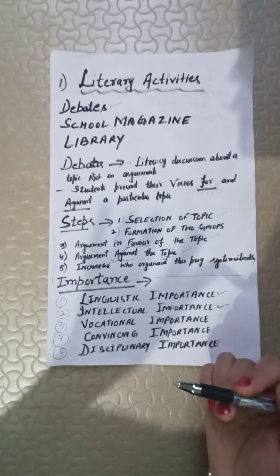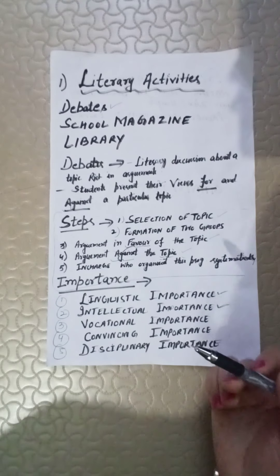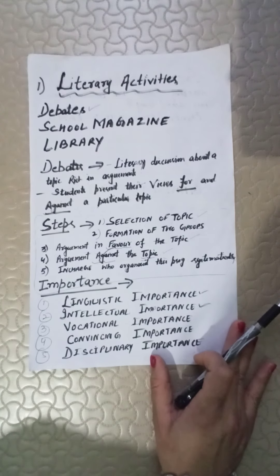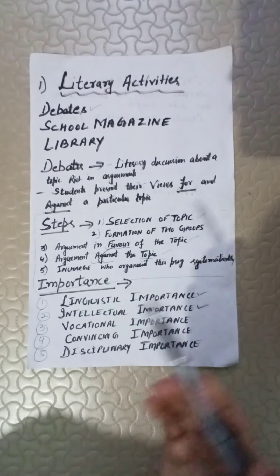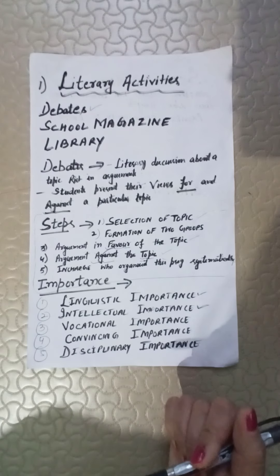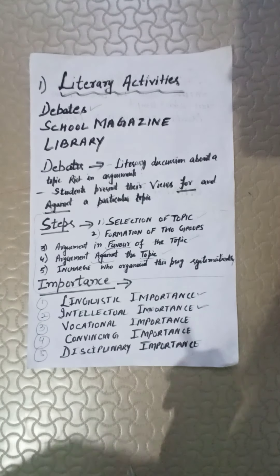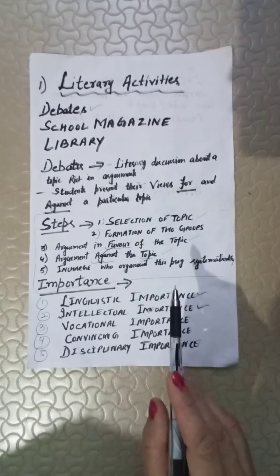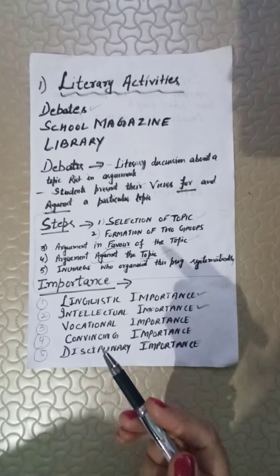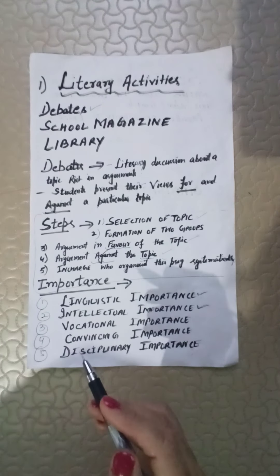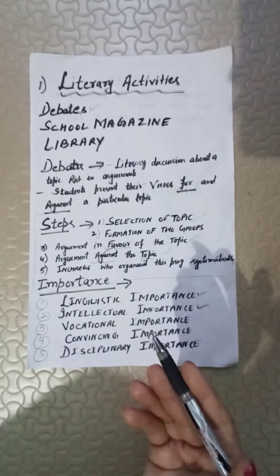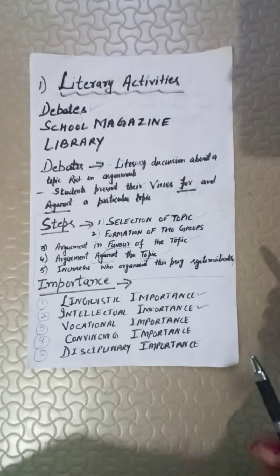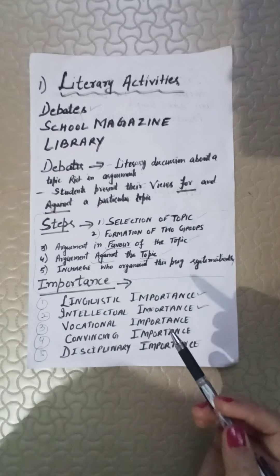Children are given a topic, and some children give their thoughts and opinions. In the debate, there are two groups — one group will be in favour and the other group will be against. For example, when we take a topic, some children give their merits and others give the merit against.